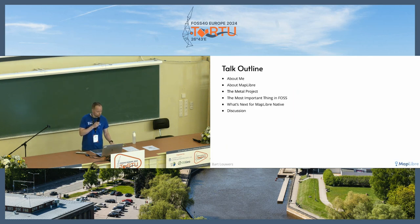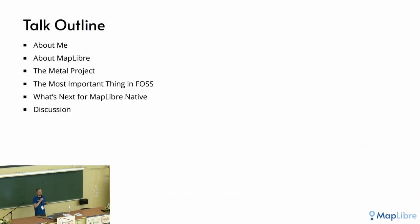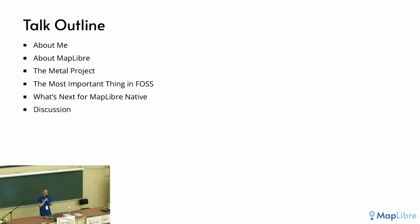Here's a short outline of my talk. First, I will properly introduce myself, then I'll talk a little bit about MapLibre, and then I'll introduce this new rendering backend — the first major milestone that we've achieved with MapLibre Native. Then we will talk about the most important thing in free and open source software. And I'll shortly touch on what's next for MapLibre Native, and then we have some time for a short discussion.